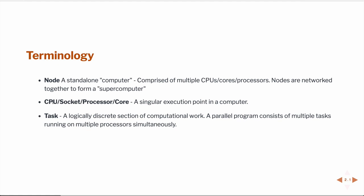A task would be a single instance of computational work. Often we have multiple tasks that we can do at the same time, and we're going to run them on multiple processors and multiple cores simultaneously. Those cores can exist on a single node or they can exist across a network of nodes on a supercomputer.